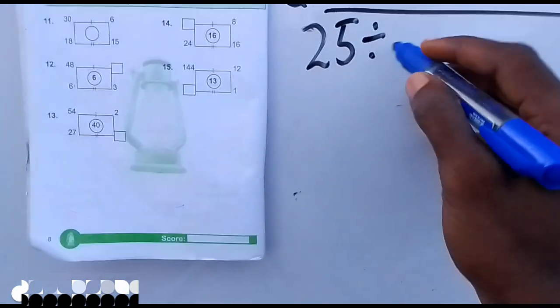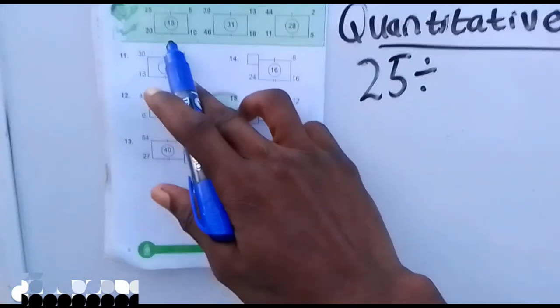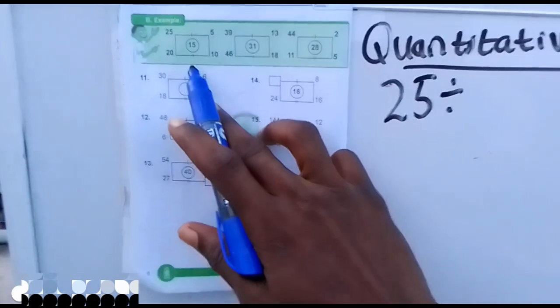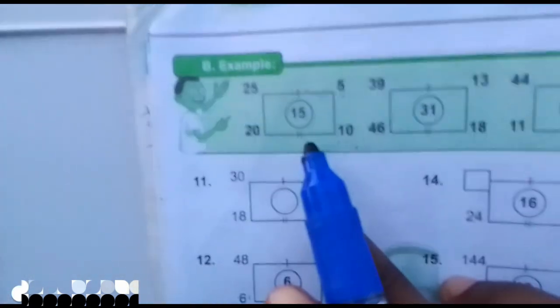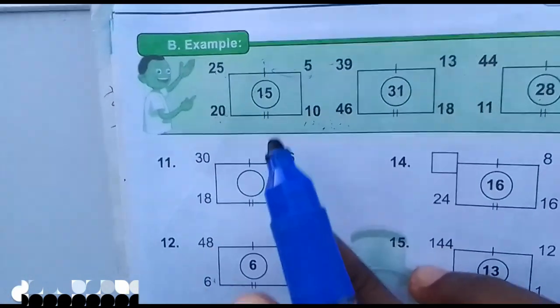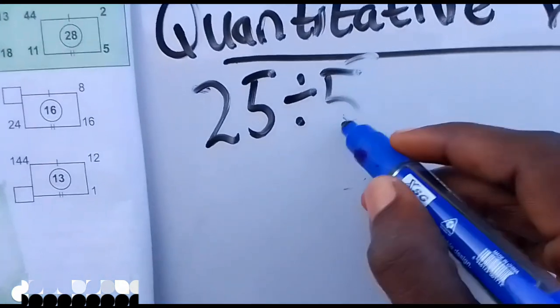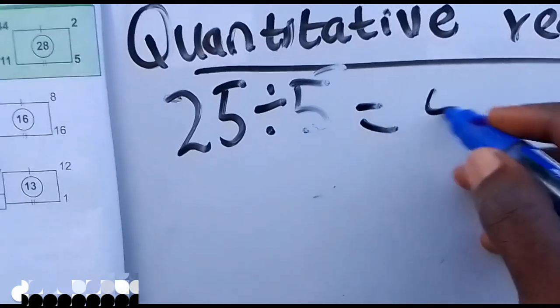25 divided by... because there is one stroke here, it means that this one stroke and two strokes mean something. The one stroke and two stroke means something. So 25 divided by 5 gives us 5.